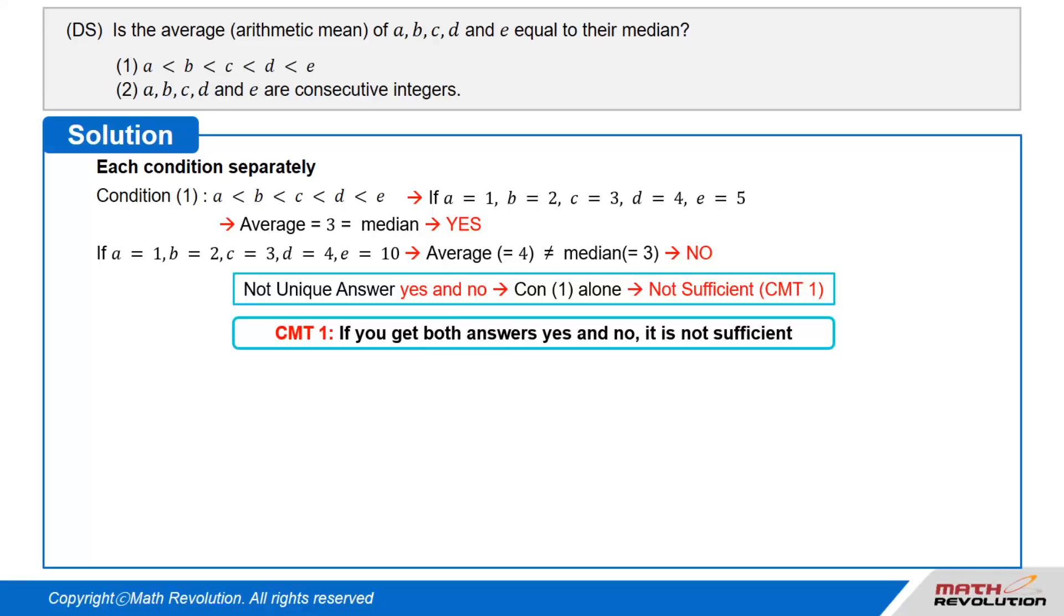The answer is not unique, so the condition is not sufficient according to CMT 1, which means that if you get both answers yes and no, it is not sufficient.